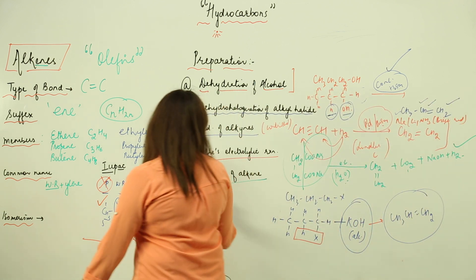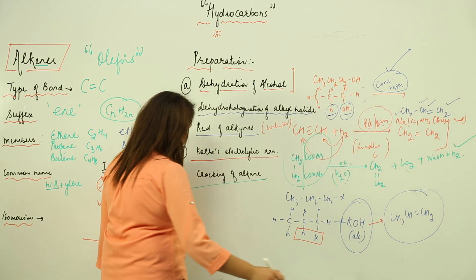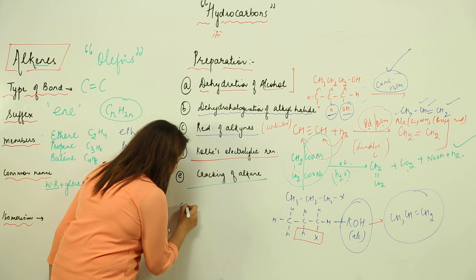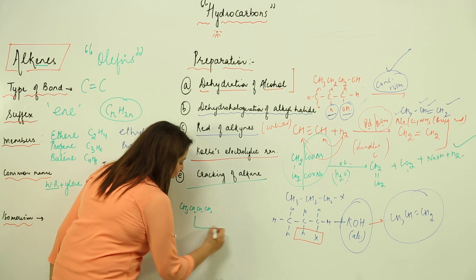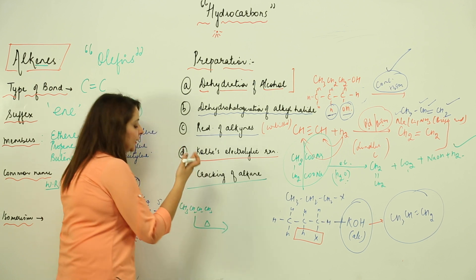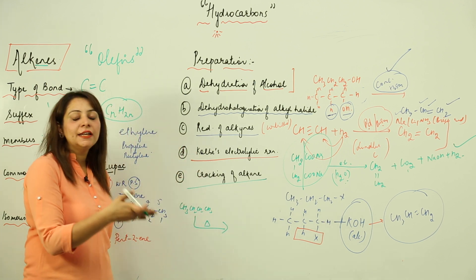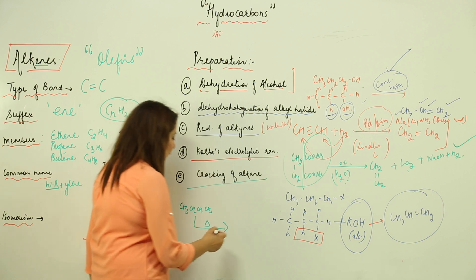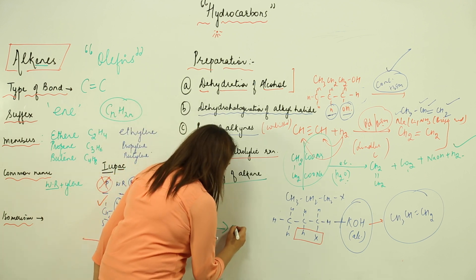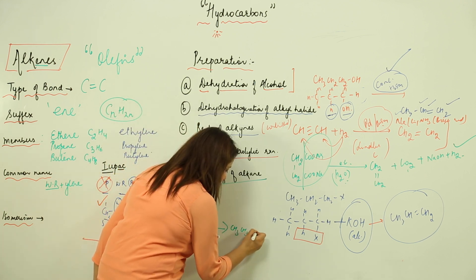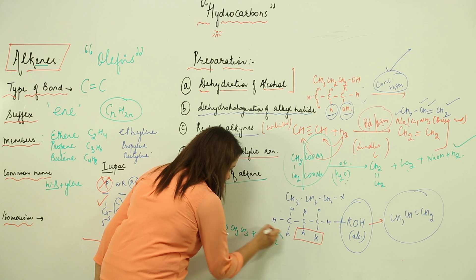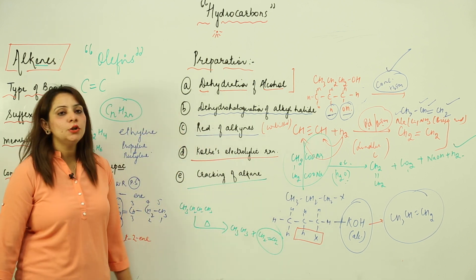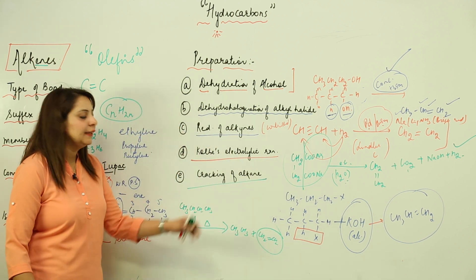The fifth method is cracking. When you take a larger alkane — say propane — and heat it at high temperature, it breaks apart to give a mixture of alkane and alkene. This mixture can be separated based on boiling points and other tests. So cracking of alkanes is a method to prepare alkenes.